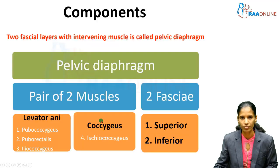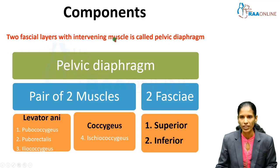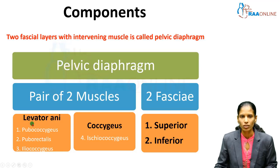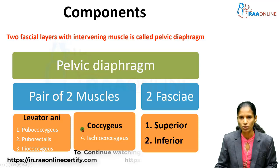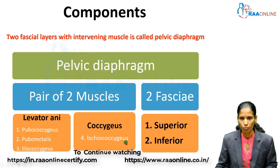The pelvic diaphragm consists of two fascial layers with intervening muscles. There is a superior fascia and an inferior fascia, and between them two pairs of muscles are present. The first muscle is the levator ani, which consists of three components: pubococcygeus, puborectalis, and iliococcygeus. The other muscle present between the two fasciae is the coccygeus muscle, which is the ischiococcygeus part of the pelvic diaphragm.